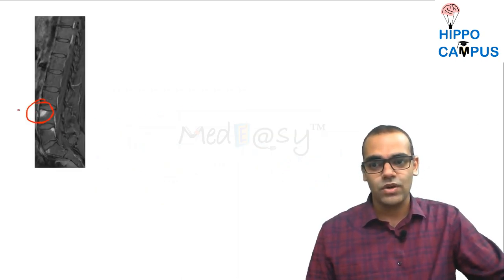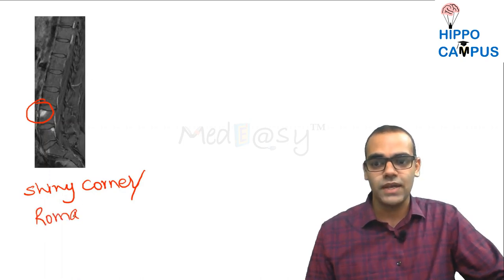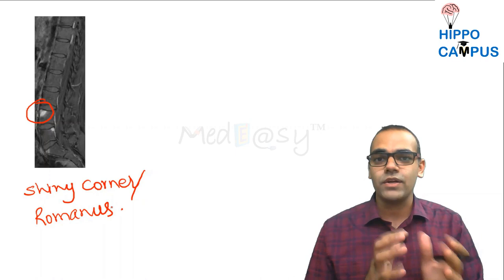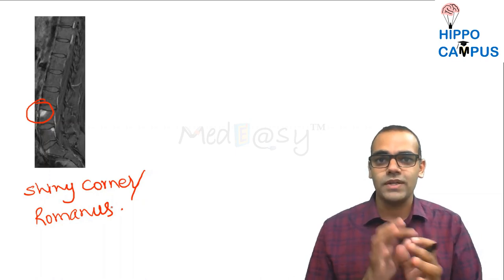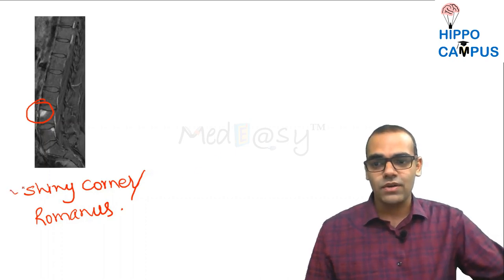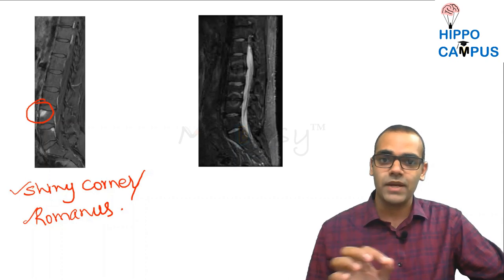Another important MRI sign: the corner appears shiny white, known as the shiny corner sign or Romano's sign. The anterior inferior or anterior superior aspect of the vertebral body is sclerotic, appearing white. This is classical of ankylosing spondylitis.